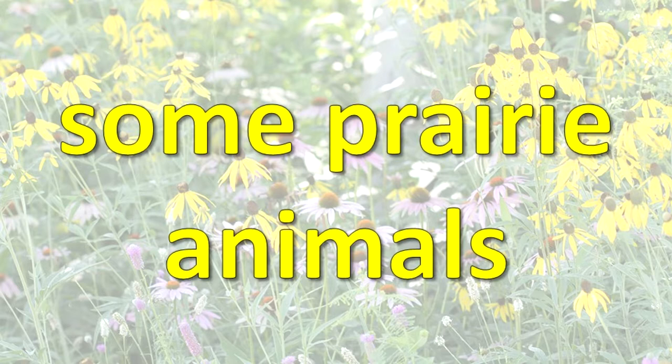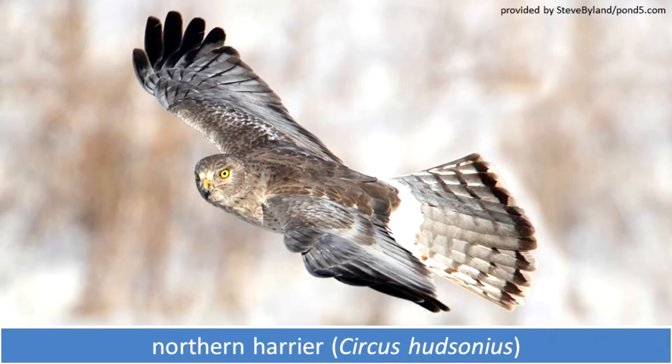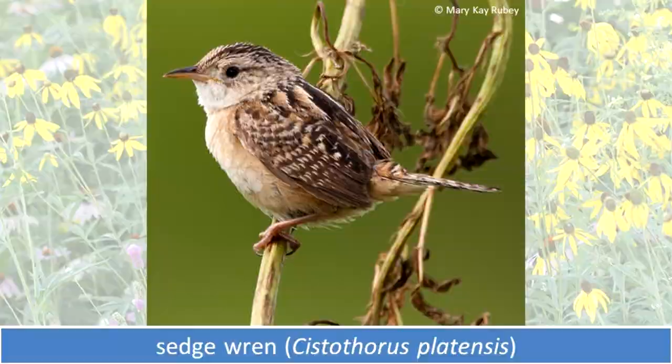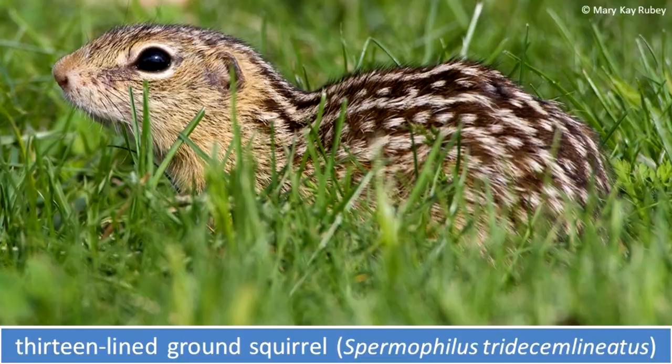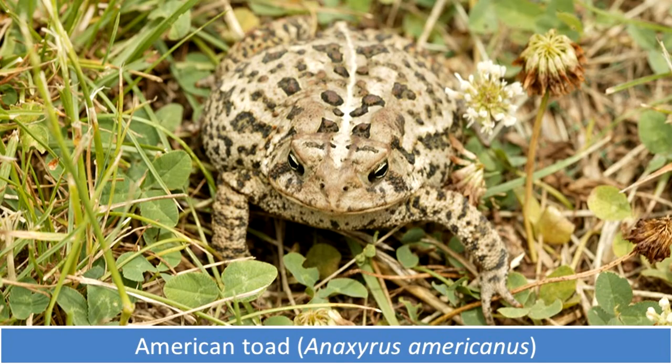Here are some of the animals that live in the prairies of Illinois: northern harrier, monarch butterfly, sedge wren, thirteen-line ground squirrel, and American toad.